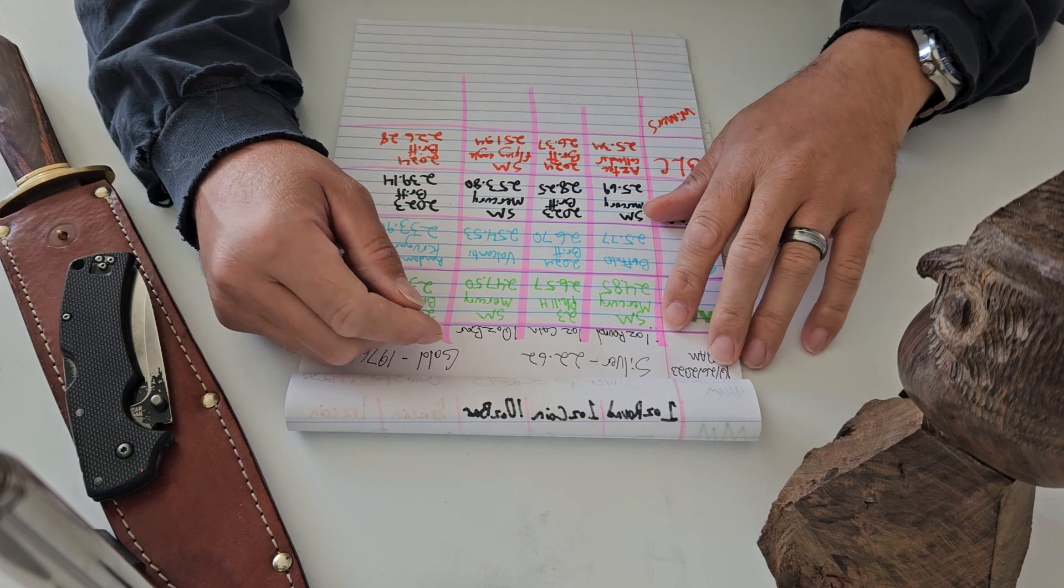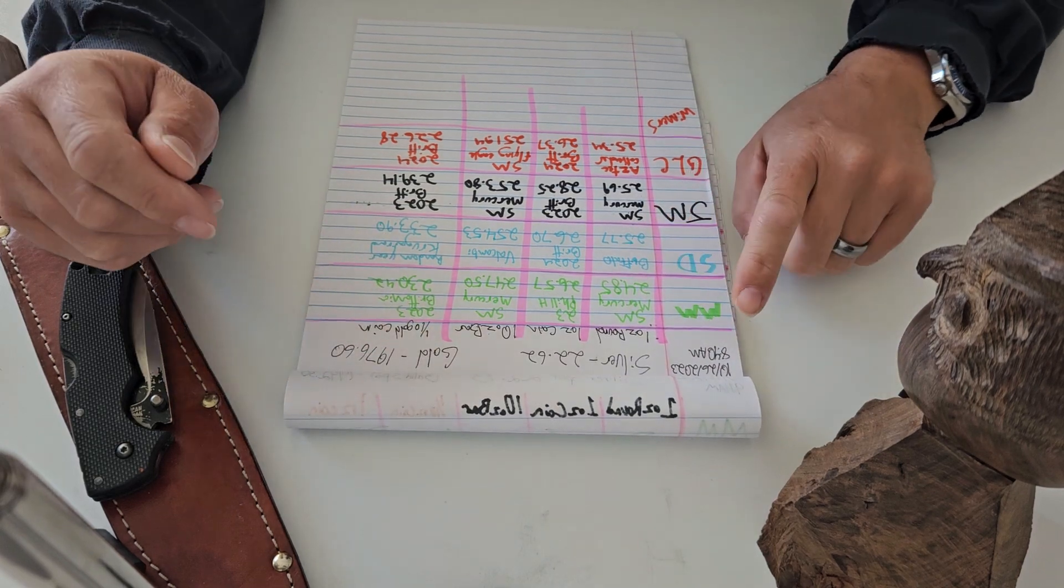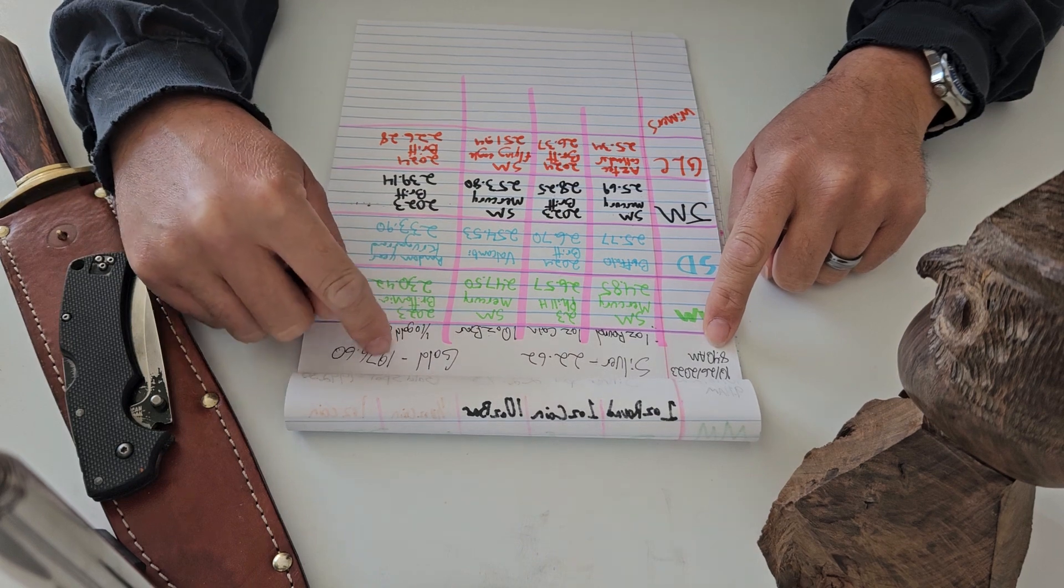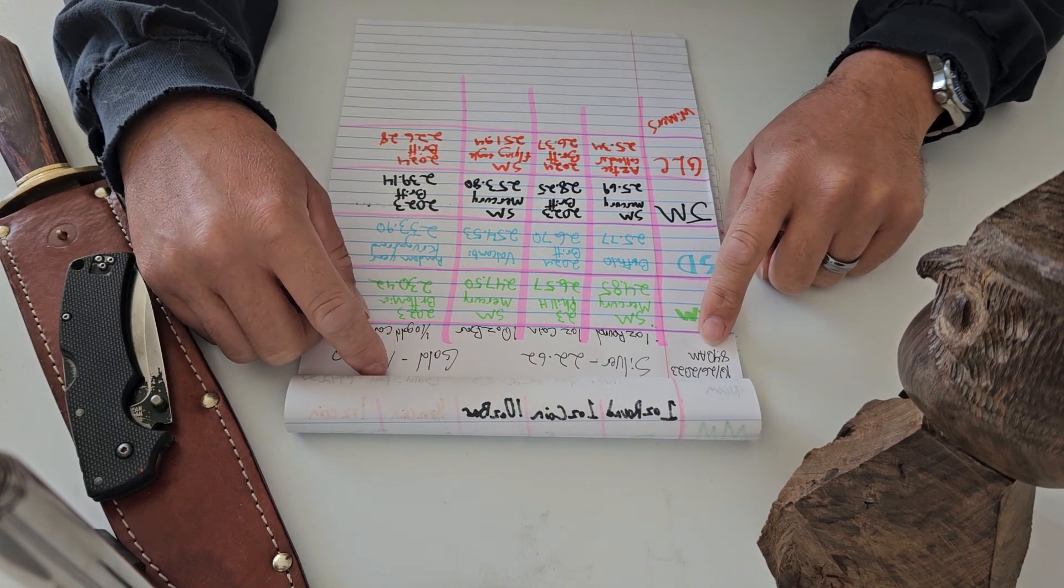Anyways, today is October 26, 2023. At the time of recording, my spot prices at Kitco.com, it was about 8:40 a.m. Mountain Time.